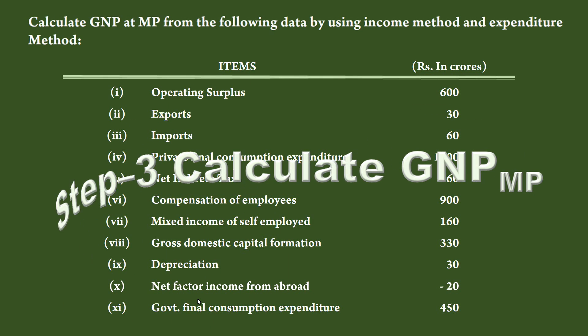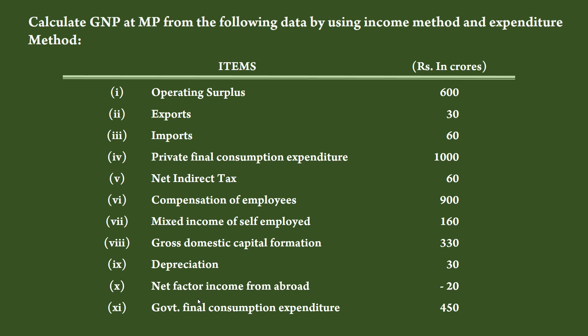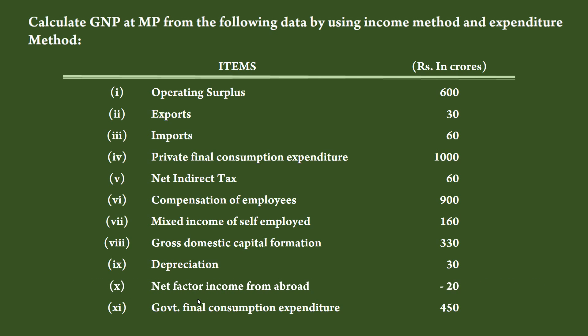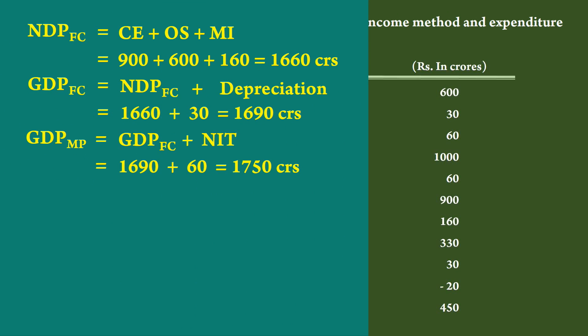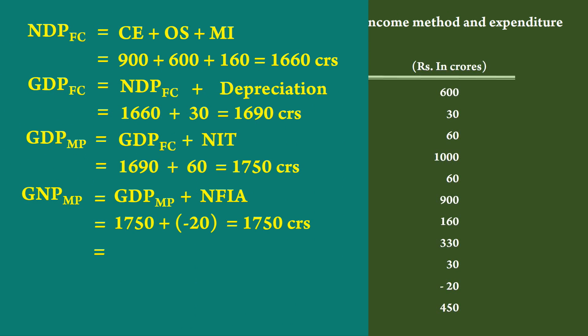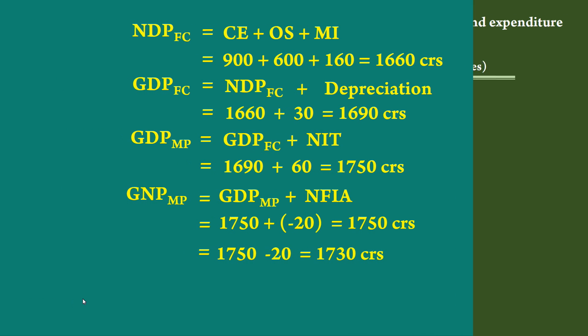Step 3: Calculate gross national product at market price. Add net factor income from abroad to find the value of gross national product at market price. Net factor income from abroad is minus 20 crores. Gross national product at market price is 1750 minus 20, equal to 1730 crores. We have arrived at gross national product at market price: 1730 crores.